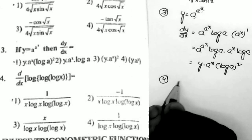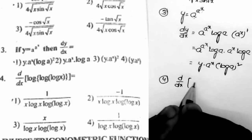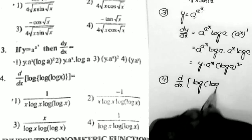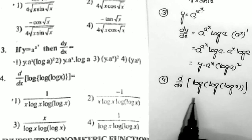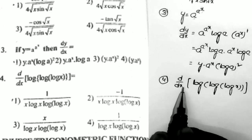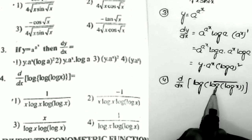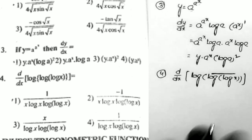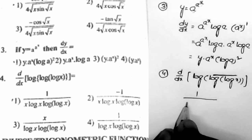The fourth question: d/dx of log(log(log x)). We want the derivative value. This is in the form of d/dx of log x — treating the inner expression as x. The derivative of log x is 1/x, so we get 1/(log(log x)).